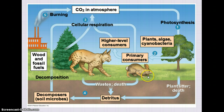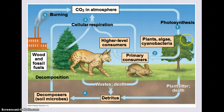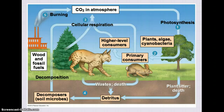Here we have a diagram showing the carbon cycle. Photosynthesis uses CO2 from the atmosphere, making it available to plants and then to animals. Carbon returns to the soil via death, plant litter, and animal waste, and is decomposed there. Plants and animals also return CO2 to the atmosphere through cellular respiration. Additionally, burning wood and fossil fuels adds CO2 to the atmosphere, increasing its percentage and disrupting the balance of carbon passing through the system.